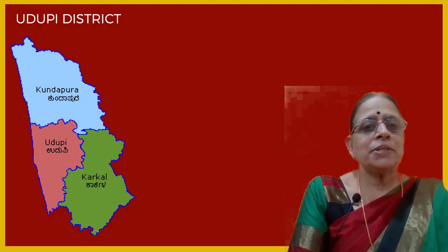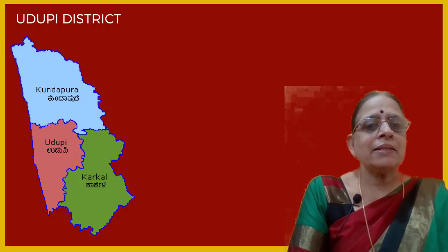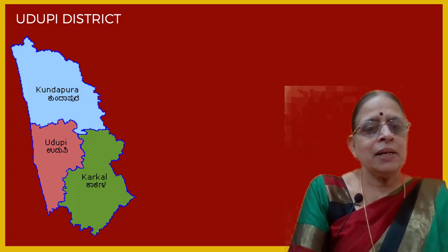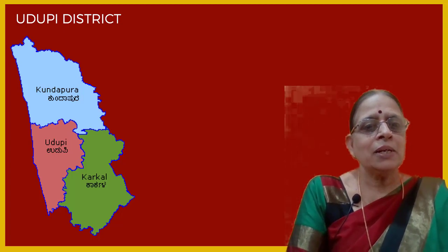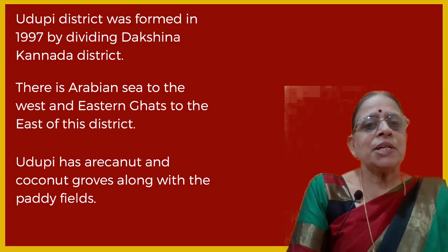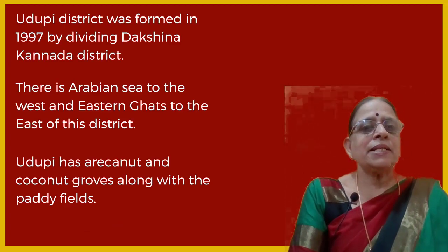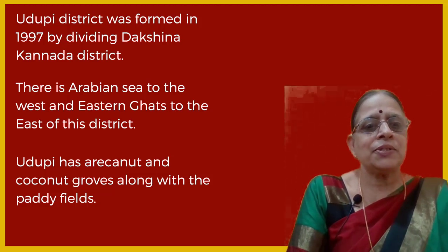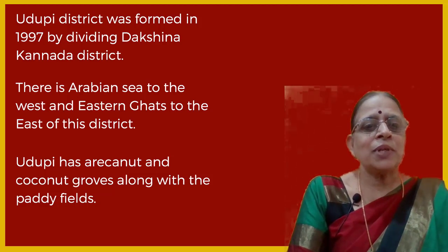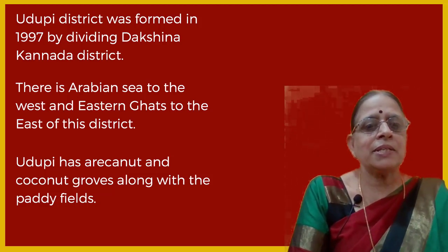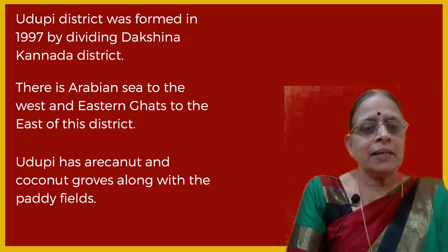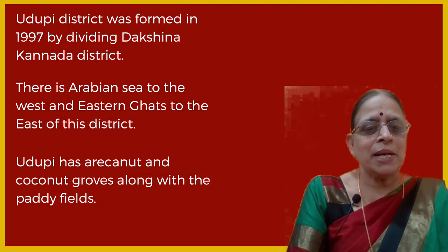Let us move on to Udupi district. Udupi district has three taluks: Kundapura, Udupi and Karkala. Udupi district was formed in 1997 by dividing Dakshinakannada district. There is the Arabian Sea to the west and the Eastern Ghats to the east of this district. Udupi has arecanut and coconut groves along with paddy fields.